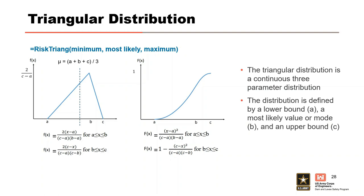A triangular distribution is defined by a lower bound, an upper bound, and a most likely value. The mean is equally sensitive to each parameter and equals the average of those three values. This distribution has no theoretical basis but derives its statistical properties from its geometry. It is popular during team elicitations because of its simplicity, versatility, and the intuitive nature of its defining parameters. A best estimate probability should never be taken as the most likely value — it should be the mean. The mode and mean are only equal in the special case where the triangle is symmetrical.